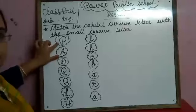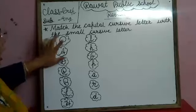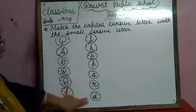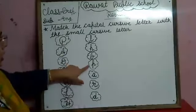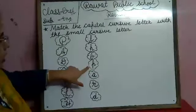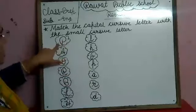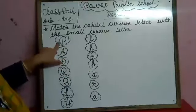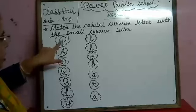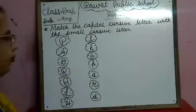Which letter is this? P — capital cursive P. So, aapko is khali line mein small cursive P kaonsa hai? This. This is small cursive P and this is capital cursive P. So, match the capital cursive P with the small cursive P.